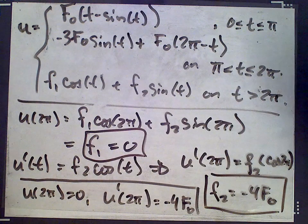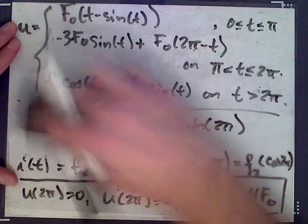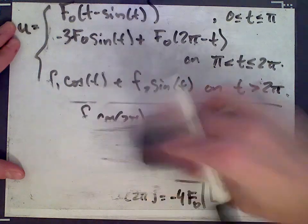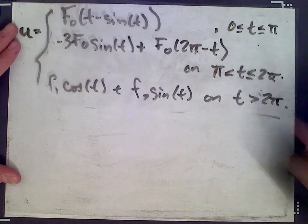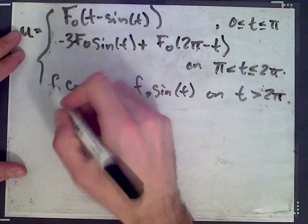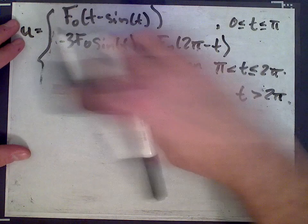So we have f2 is negative 4 f0, and then finally, we get... so I can erase this now.